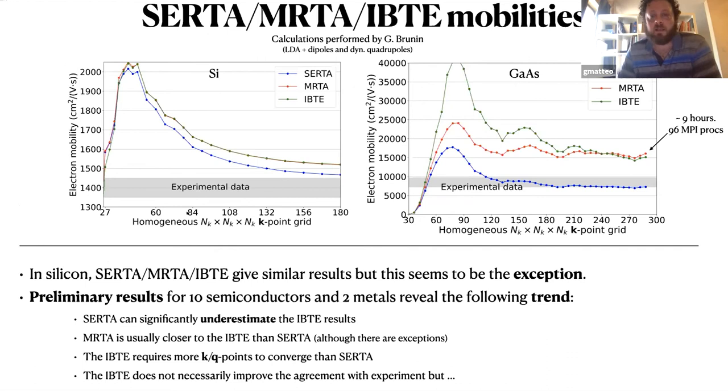Some final results. We are performing calculations for semiconductors and metals. And here I'm showing results for silicon and gallium arsenide because these are well-known systems that have been reported in the literature. What we have observed so far is that silicon is the exception. It's the typical case in which whatever you do, you get something that makes sense. Because the SERTA is relatively close to the exact solution. The MRTA is doing a great job in reproducing the exact results. But if you look at the more complicated case of gallium arsenide, what we observe is that SERTA is strongly underestimating the exact results, although it is in reasonable agreement with the experiments. The other behavior that we are observing is that the momentum relaxation time, as well as the IBTE, require more k-points and q-points to converge. And that solving the IBTE equation does not necessarily improve the agreement with the experiment.